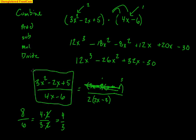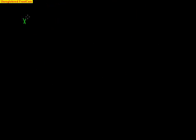Now let me show you another example where a little bit more could be done. Let's say we have x squared minus 9x plus 20 — that's a second degree trinomial — and we're going to divide that by x squared minus 16.